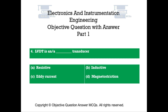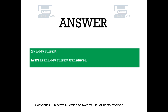Question number 4. LVDT is an dash transducer. Option A: Resistive. Option B: Inductive. Option C: Eddy current. Option D: Magnetostriction. The right answer is Option C — Eddy current. LVDT is an eddy current transducer.